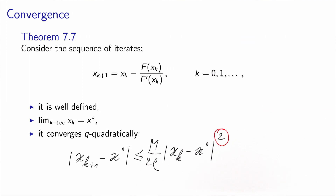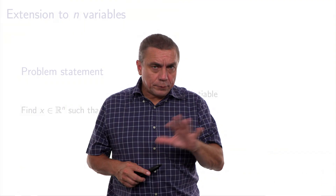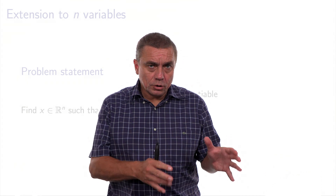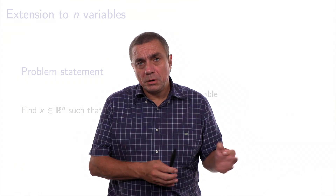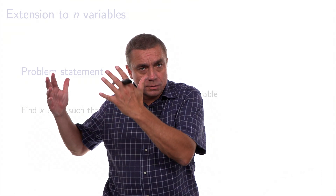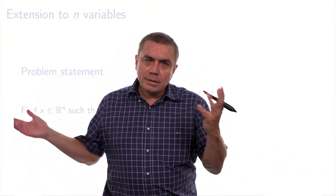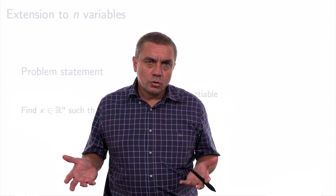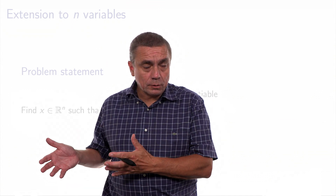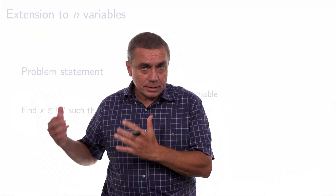The proof of the theorem is out of the scope of this course; if you are interested, you can look at theorem 7.7 in the book. We have seen this concept in the context of one equation with one variable, but it extends directly to the case of a system of n equations with n variables.